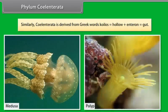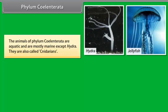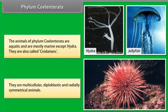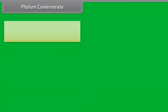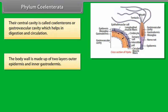Phylum Coelentrata. Coelentrata is derived from Greek words 'coelos' meaning hollow, plus 'enteron' meaning gut. The animals of Phylum Coelentrata are aquatic and mostly marine except Hydra. They are also called cnidarians. They are multicellular, diploblastic, and radially symmetrical animals. Their central cavity is called coelenteron or gastrovascular cavity, which helps in digestion and circulation. The body wall is made up of two layers: outer epidermis and inner gastrodermis.